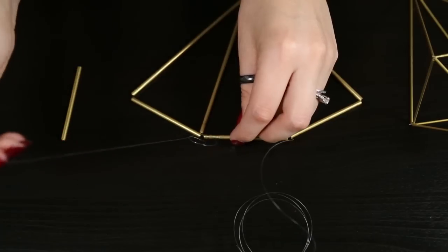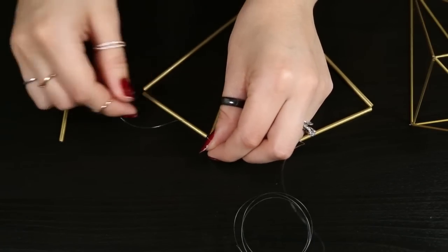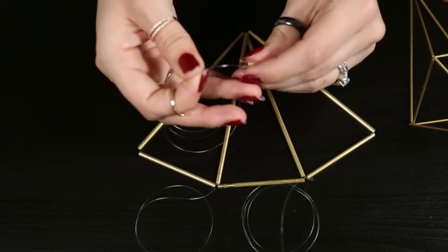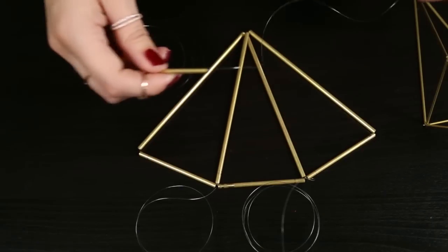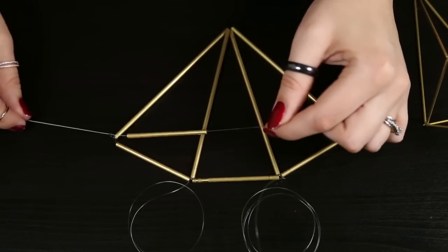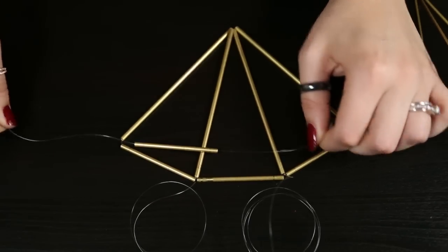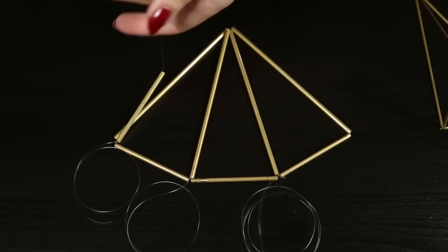So now I'm just going ahead and threading in the third piece of the base of the triangle and making sure to tie it off nice and snug. Once I have that all tied off I'm going to grab a new string and grab the last remaining base of the triangle and I'm going to connect it to the bottom and this is going to act as the bridge to create a 3D shape.